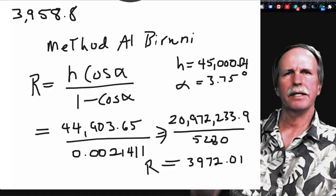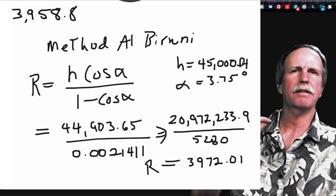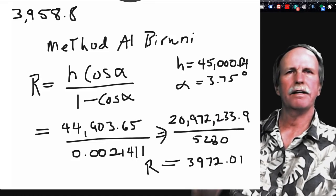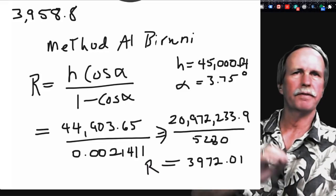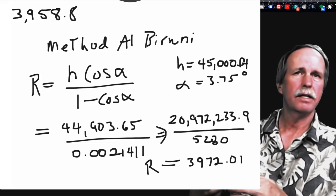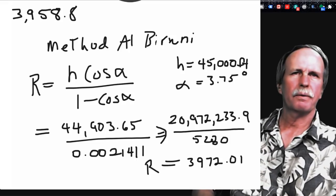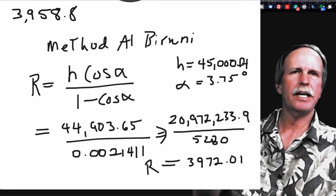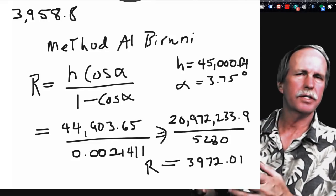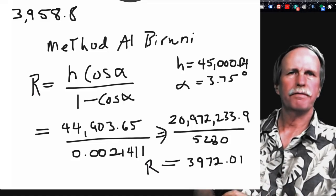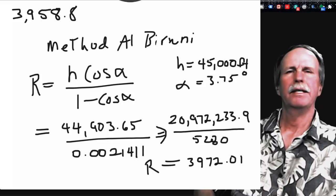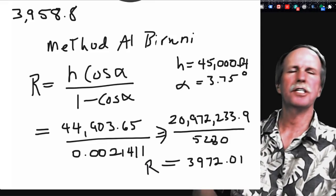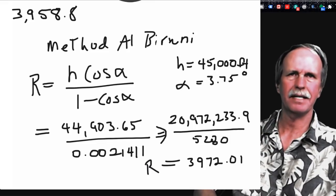If you look at the formula, it's height of the observation times the cosine of alpha, which is the dip, over 1 minus the cosine of alpha. The cosine of 0 degrees - which is what you would get from an elevation of 3 feet - is close to 1. When you have no drop to the horizon because you're measuring from just above the water, this term reverts to h over 0, which is undefined. It simply can't be used from sea level. That's why, when flat earthers try to point to the Alberuni equation, they always use sea level observations because they know it can't be done from sea level.